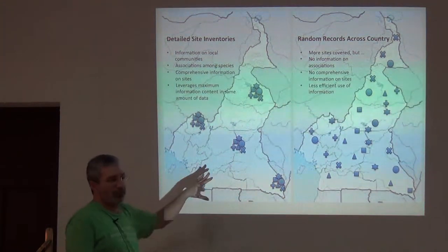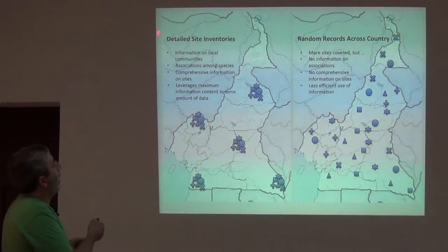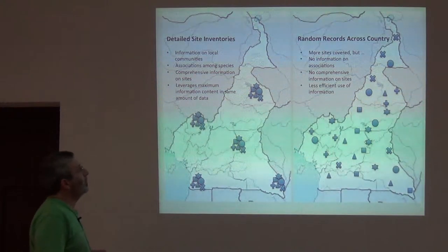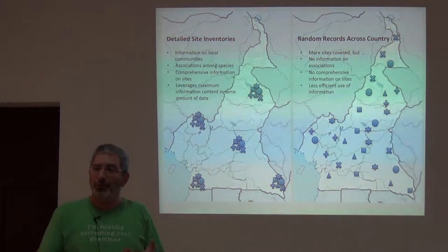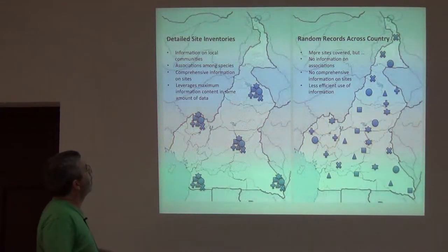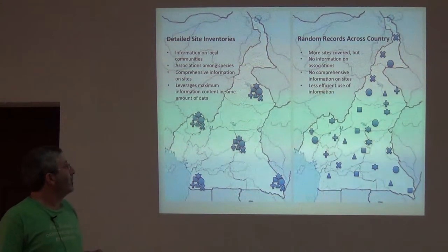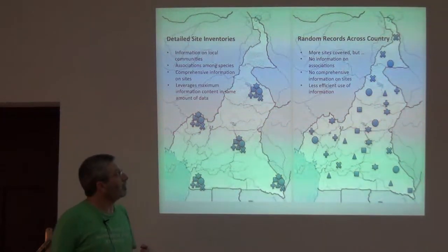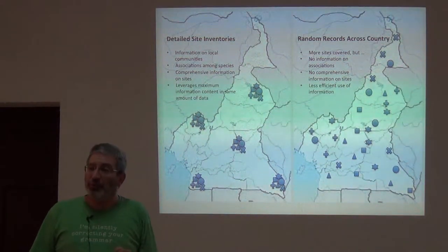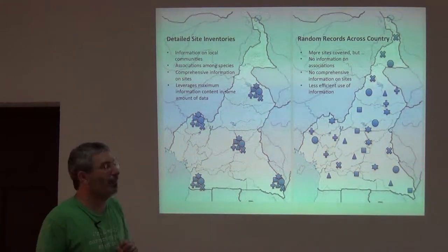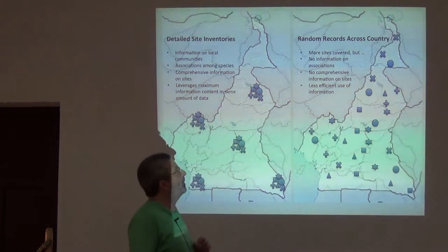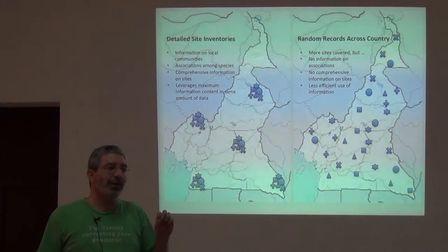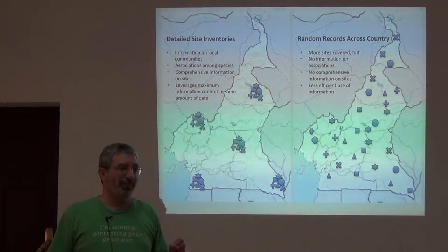Think about this pair of maps. On the side of detailed site inventories, we get good information on local communities, information on associations among species — either co-occurrence or repulsion — and comprehensive information about sites. It leverages a maximum of information content from the same amount of data. On the other side, you get more sites, a non-zero amount of information about more places, but you lose the advantages of complete information from a site. And that's a big loss.